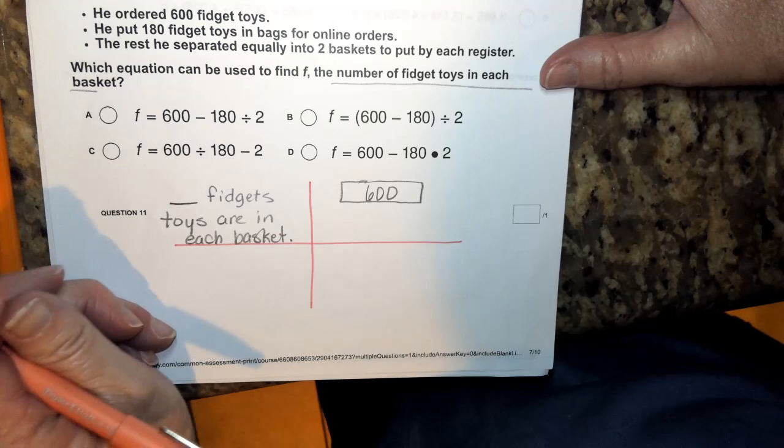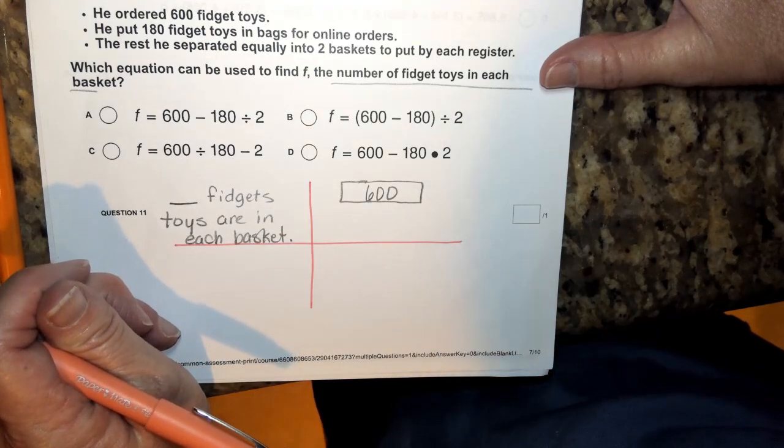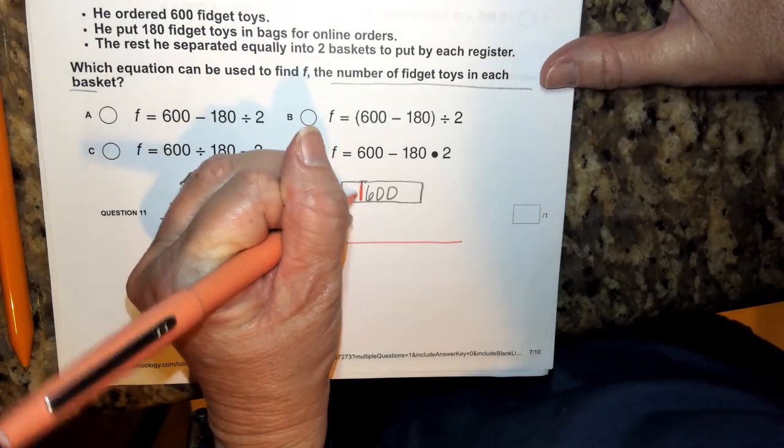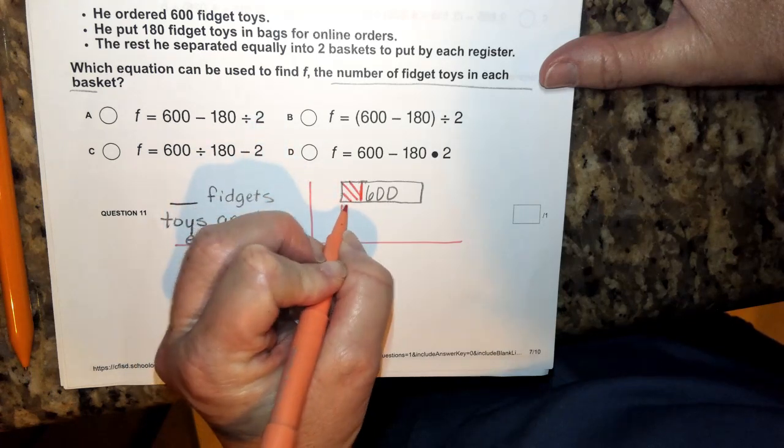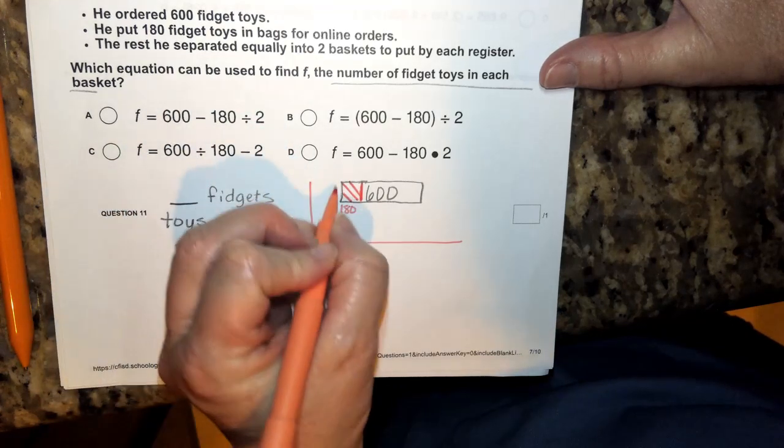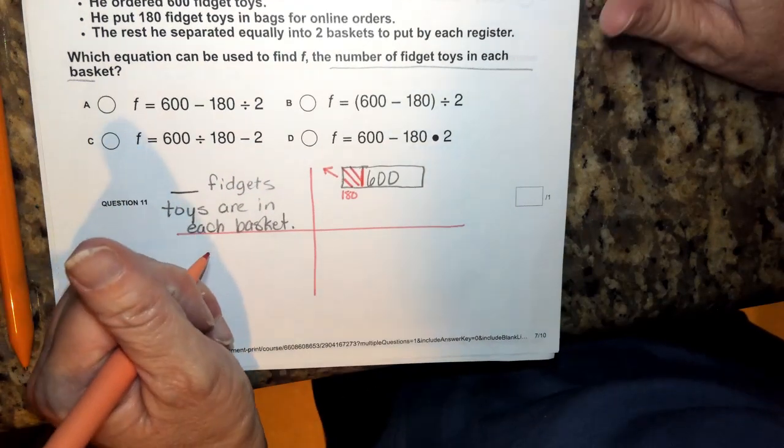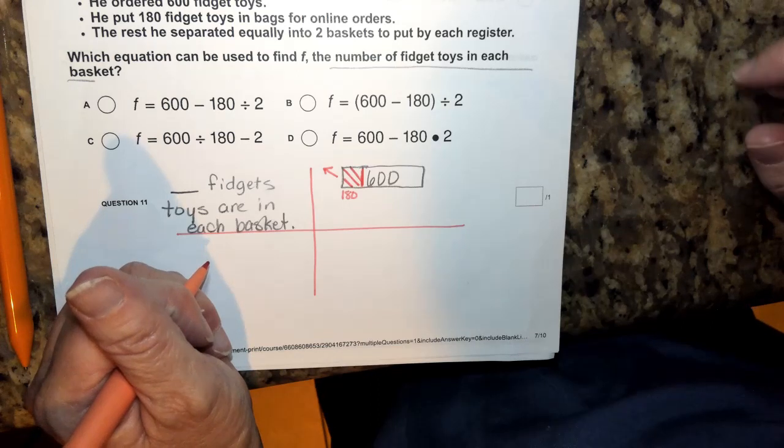He's going to put 180 fidget toys in bags for online orders. So he's going to basically take this part right here. We're going to call this 180 amount and he's removing them. So I want you to think about what happens when you remove 180 of something.